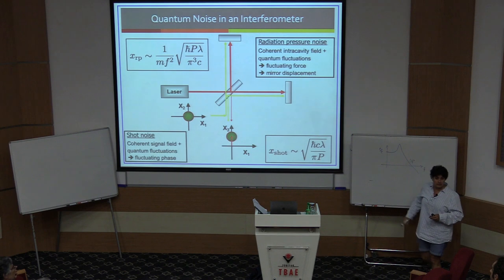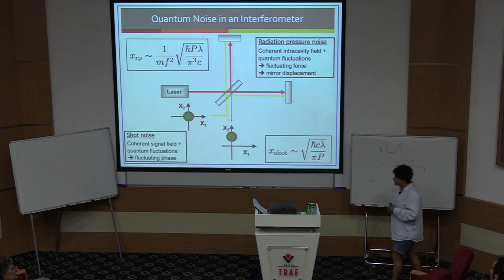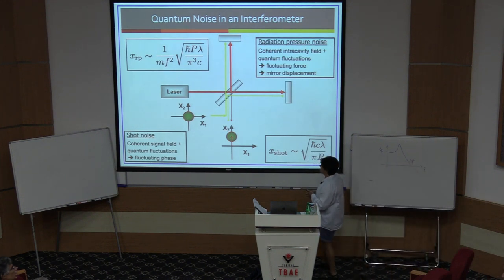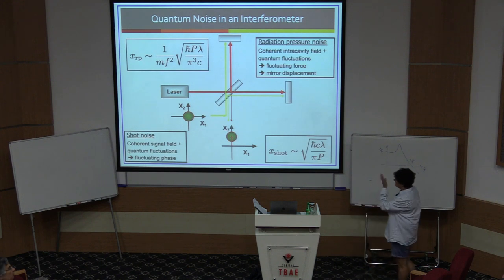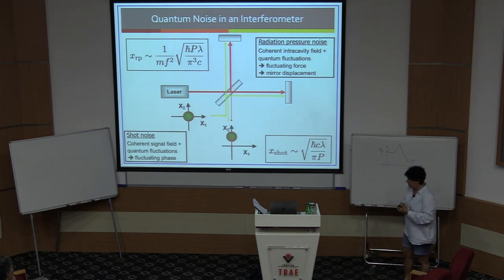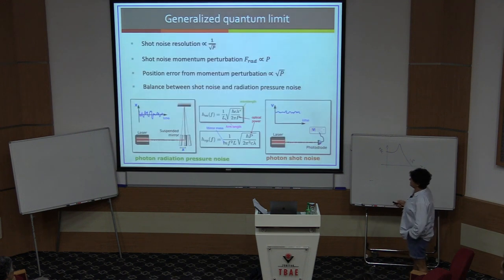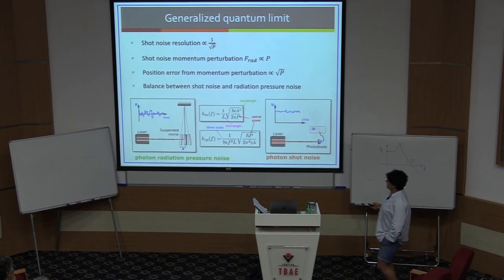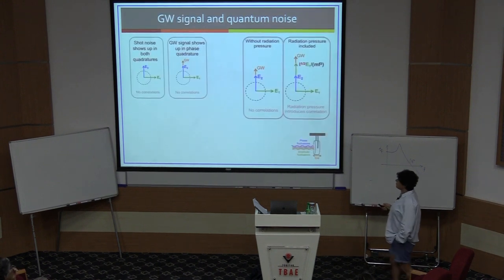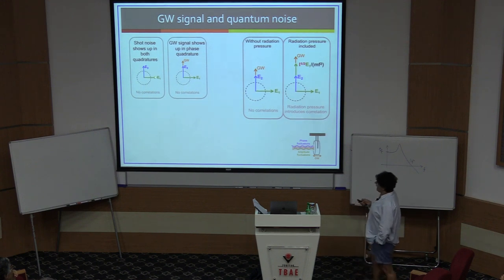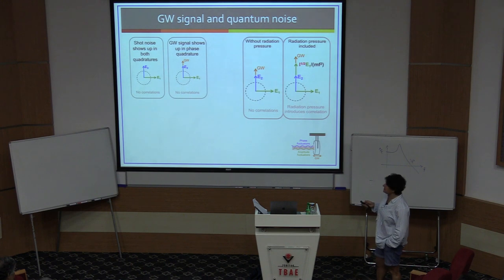So that tells you something important about how these fields look in the spectrum of the output of the Michelson interferometer. Let me put this in slightly different language. Here are your E1 and E2, the two quadratures, amplitude and phase. Shot noise is the minimum uncertainty — it's in both quadratures equally. The gravitational wave signal shows up in the phase quadrature, for the reasons we talked about yesterday: the Fabry-Perot cavity has a phase with its maximum slope right at resonance, so this is the phase quadrature where we make the signal measurement.